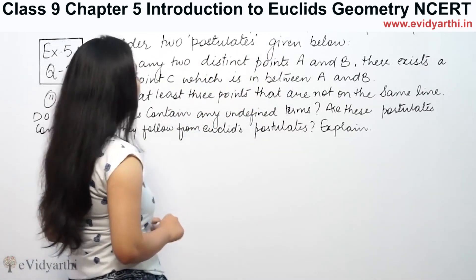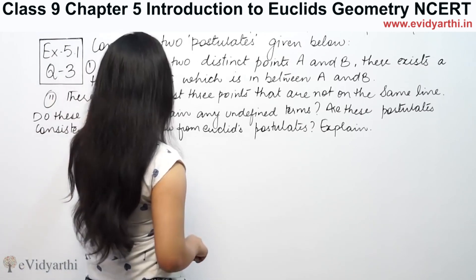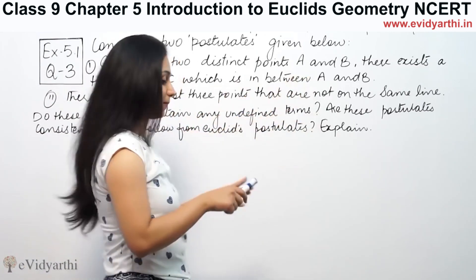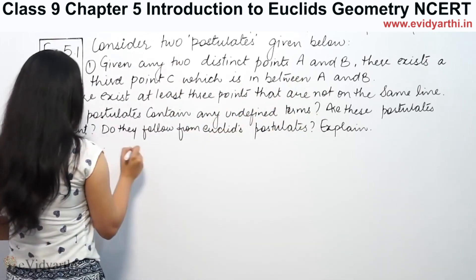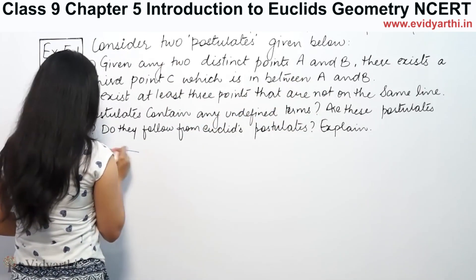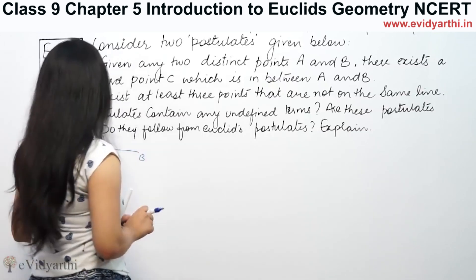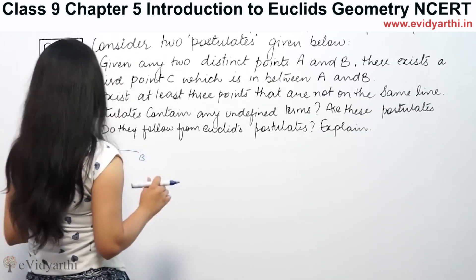This says, consider two postulates given below. Number 1: given any two distinct points A and B, there exists a third point C which is in between them.